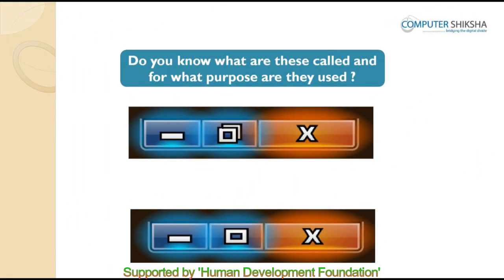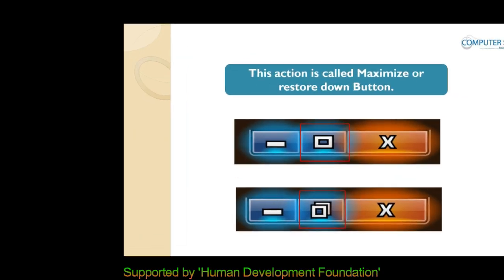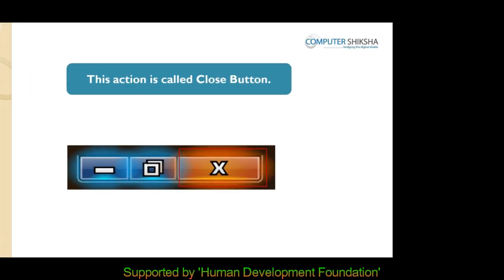In this given picture, some buttons are shown as circles. Do you know what these are called and for what purpose they are used? Just above the Paint file, on the right side, three buttons have been given. By using these, we can hide our file, make our file smaller or larger, and with the third button we can close our file. These actions are called minimize, maximize or restore, and close.